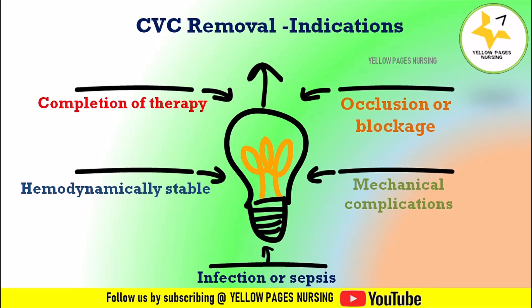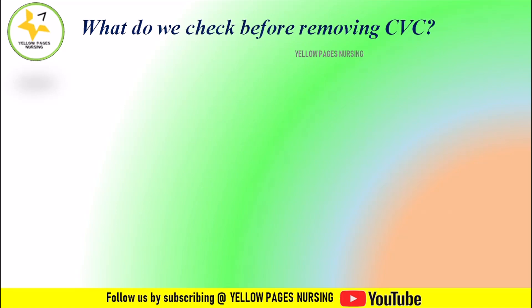Other indications include occlusion or blockage — if the catheter becomes blocked or partially occluded, impeding the flow of fluids or medications, it should be removed. Mechanical complications such as dislodgement, migration, or damage to the catheter also require removal. Additionally, if the patient develops a central line-associated bloodstream infection (CLABSI) or any other bloodstream infection, the catheter should be removed.